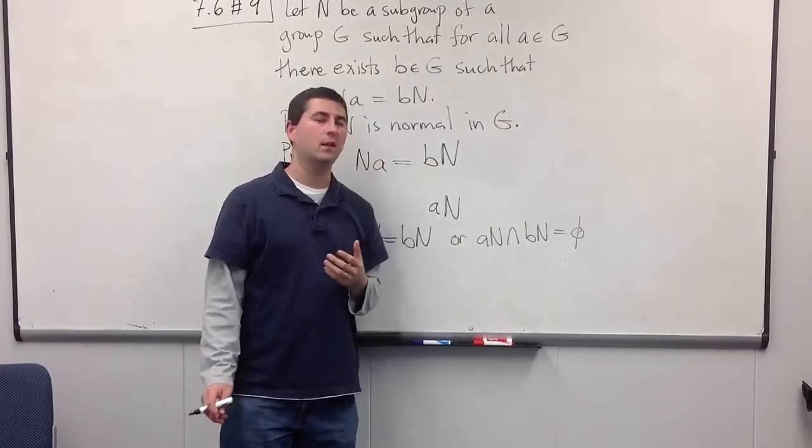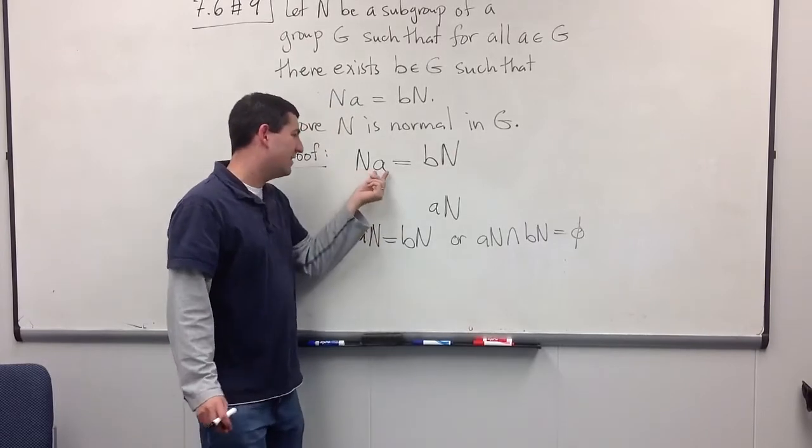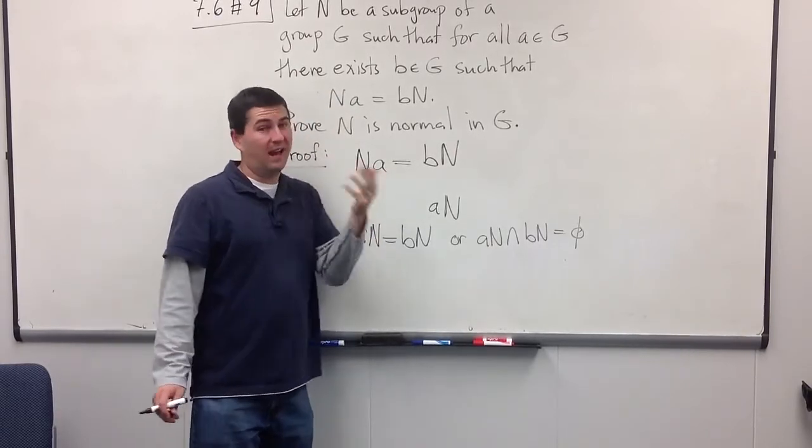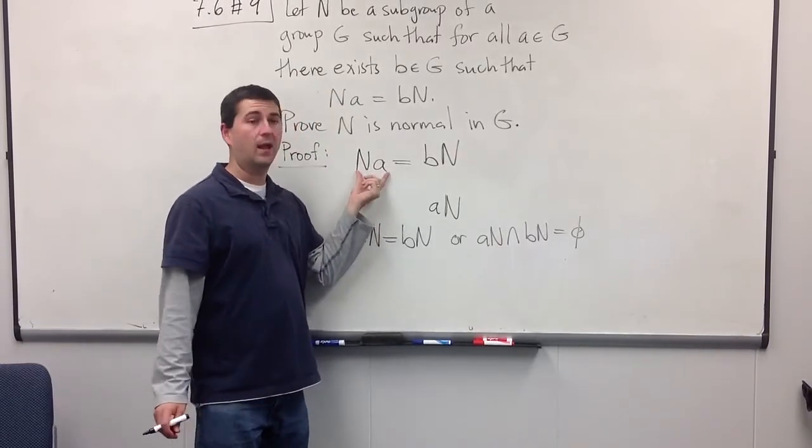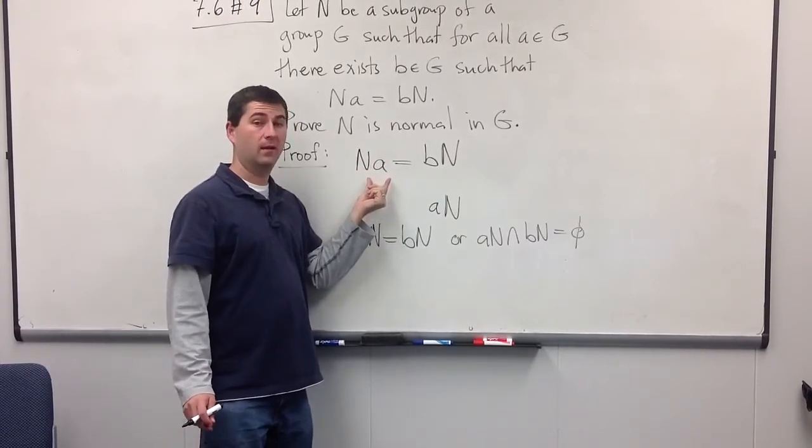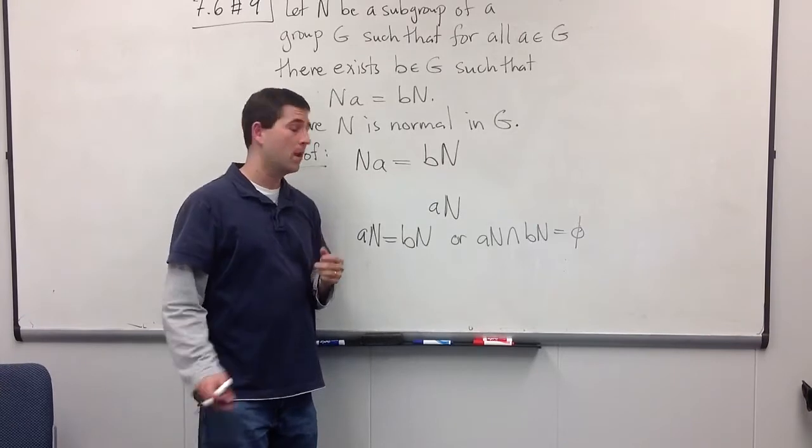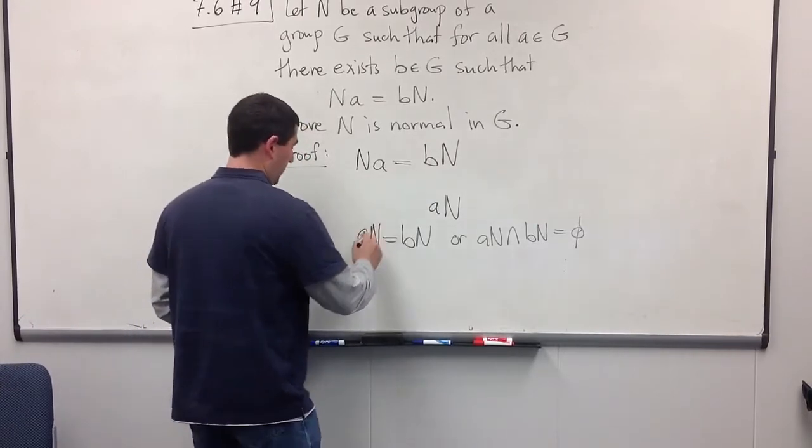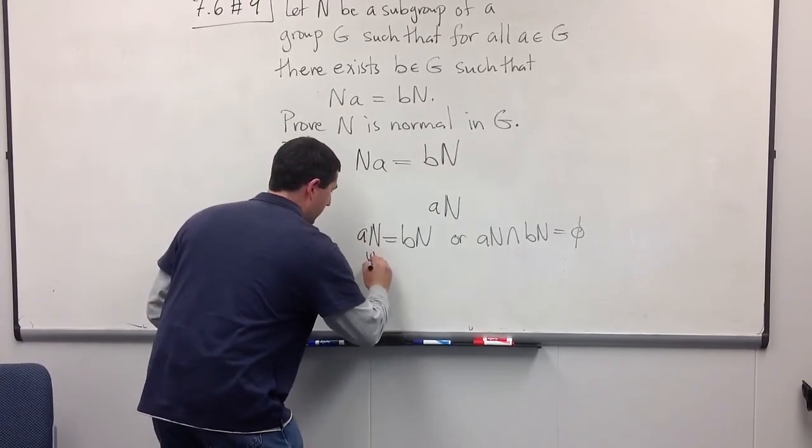Well, usually we like to start with the identity element, but unless A is actually in N, we're not going to have the identity element in NA. On the other hand, we will have the identity times A, which is just A, so we know for sure that A is an element of AN.